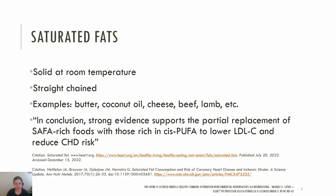Saturated fats are solid at room temperature, largely due to the lack of double bonds in the carbon chain of fatty acids, which makes them very straight. Examples of saturated fat sources include butter, coconut oil, cheese, beef, lamb, and palm oil.